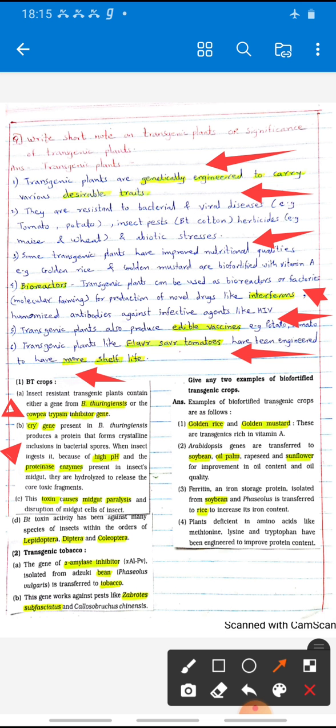Cry gene present in Bacillus thuringiensis produces protein that forms crystalline inclusion in bacterial spore.